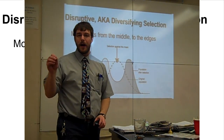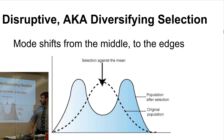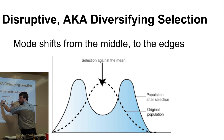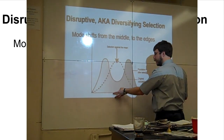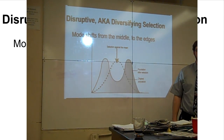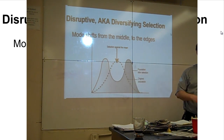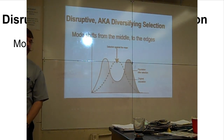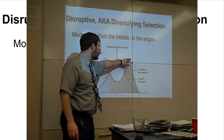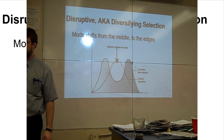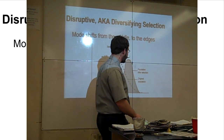Disruptive selection literally looks like the graph has been disrupted. It's also known as diversifying selection. Whatever the average was in this situation turned out to be a disadvantage, and those individuals died off. But the two extremes became more important and increased. Using height again: the medium height ones were at a disadvantage, and it was either really beneficial to be very tall or very short. The alleles for being tall and the alleles for being short will increase, but the alleles for being medium will decrease. That's disruptive, also known as diversifying selection.